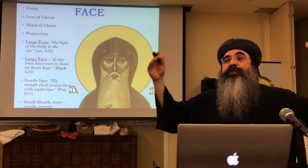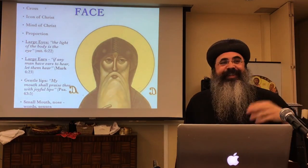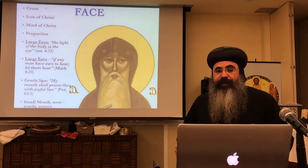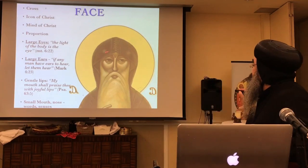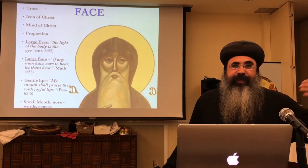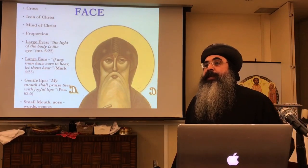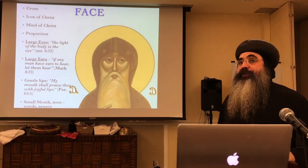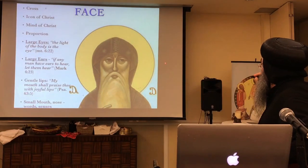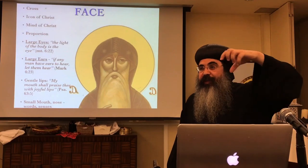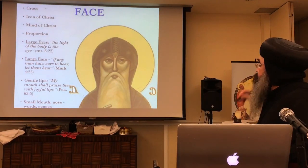One of the most important features is the face. The face is usually larger than the rest. Why? Because of the mind of Christ — this is the most important thing, that God sanctifies the mind. To have the mind of Christ will help everything else. That's why you have a small mouth — you speak a little but think much. Big eyes for perception, so they can see. And big ears — because they are quick to hear, slow to speak. The iconographer starts by drawing the eyes, because that is when God creates us with the heavenly vision, and then continues with the rest of the proportions.